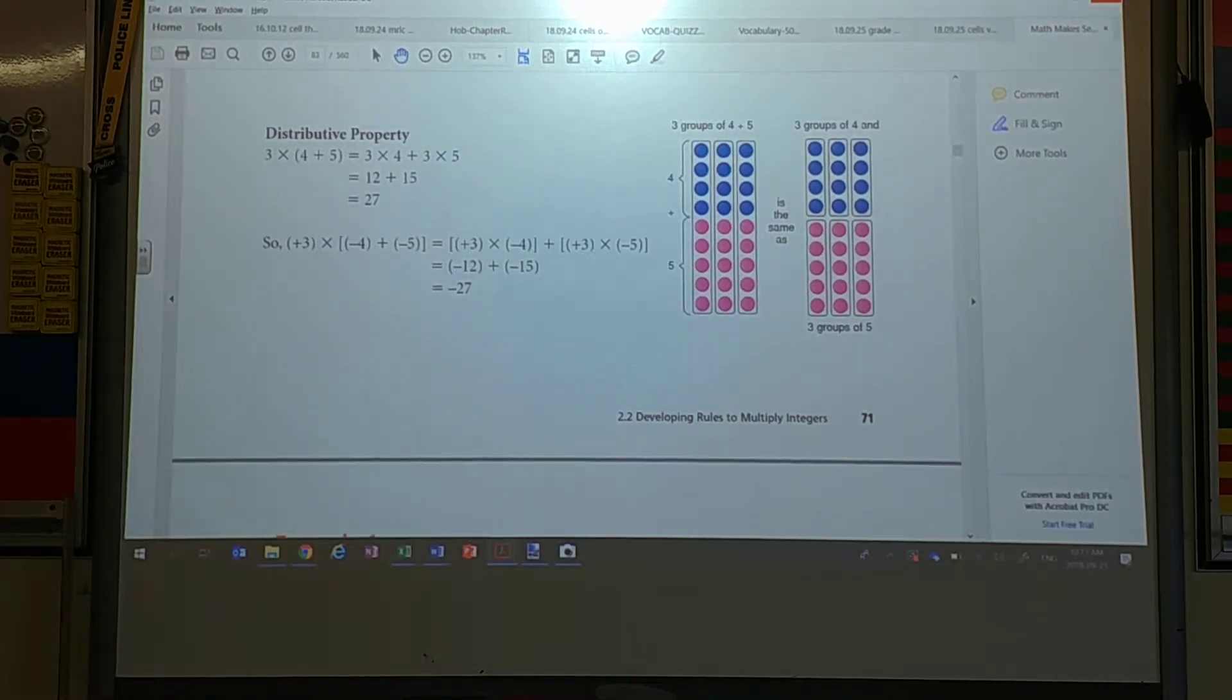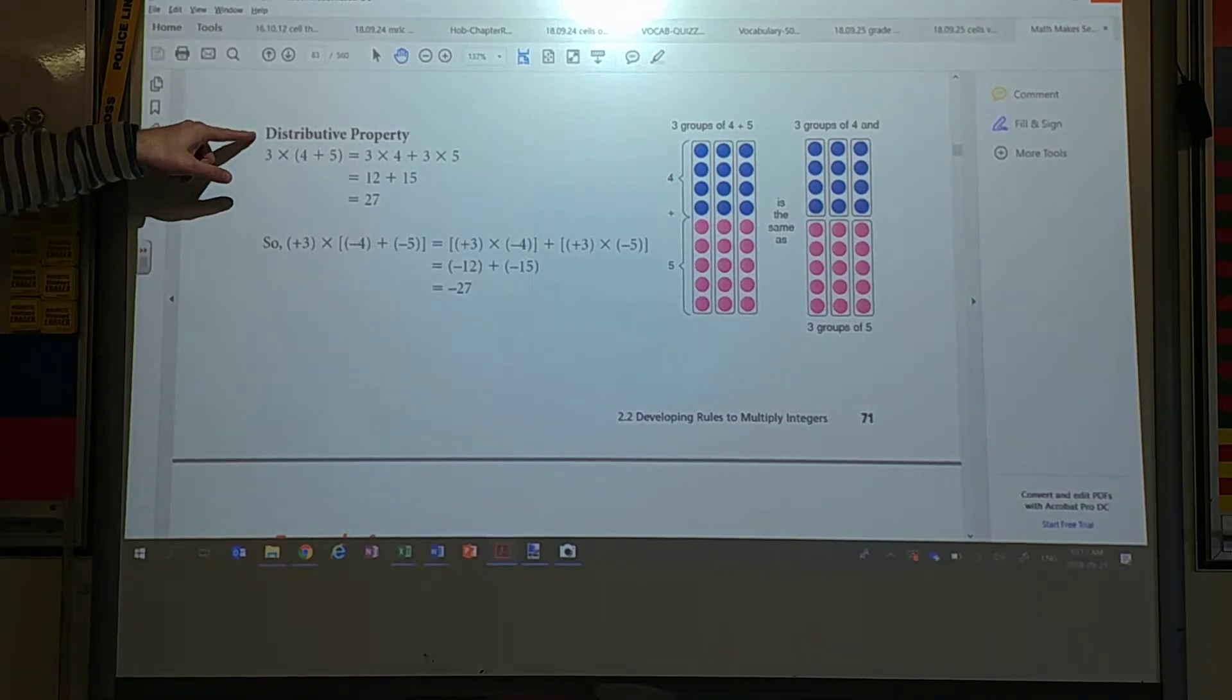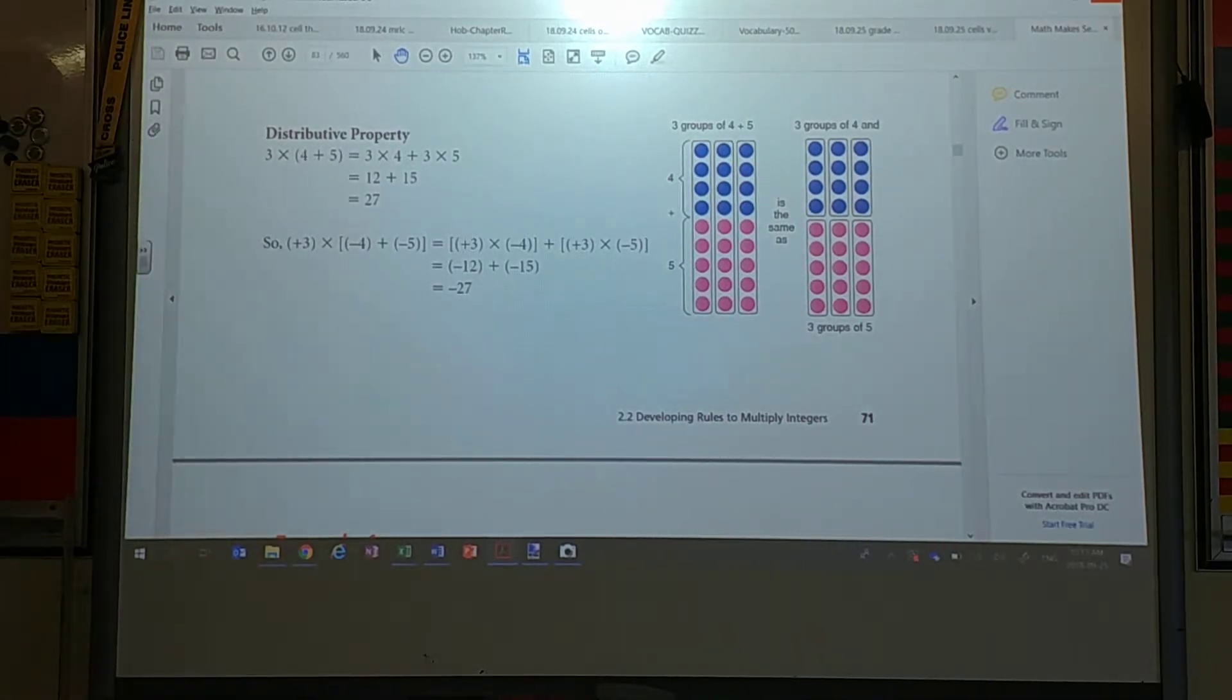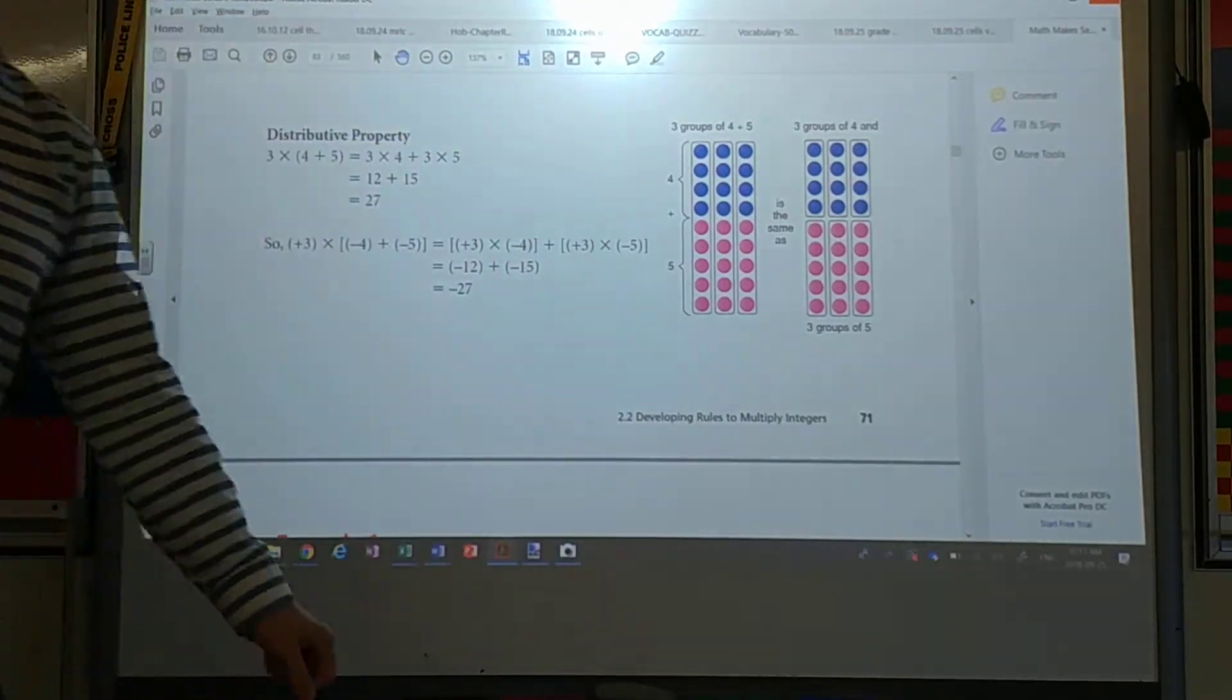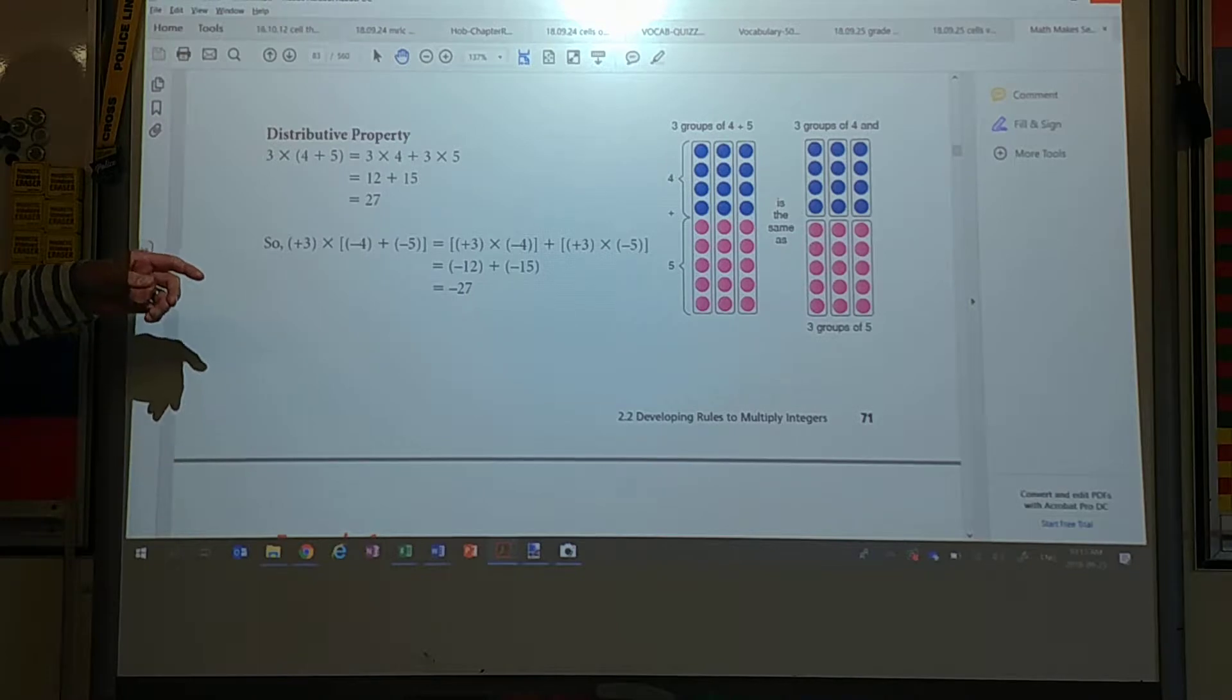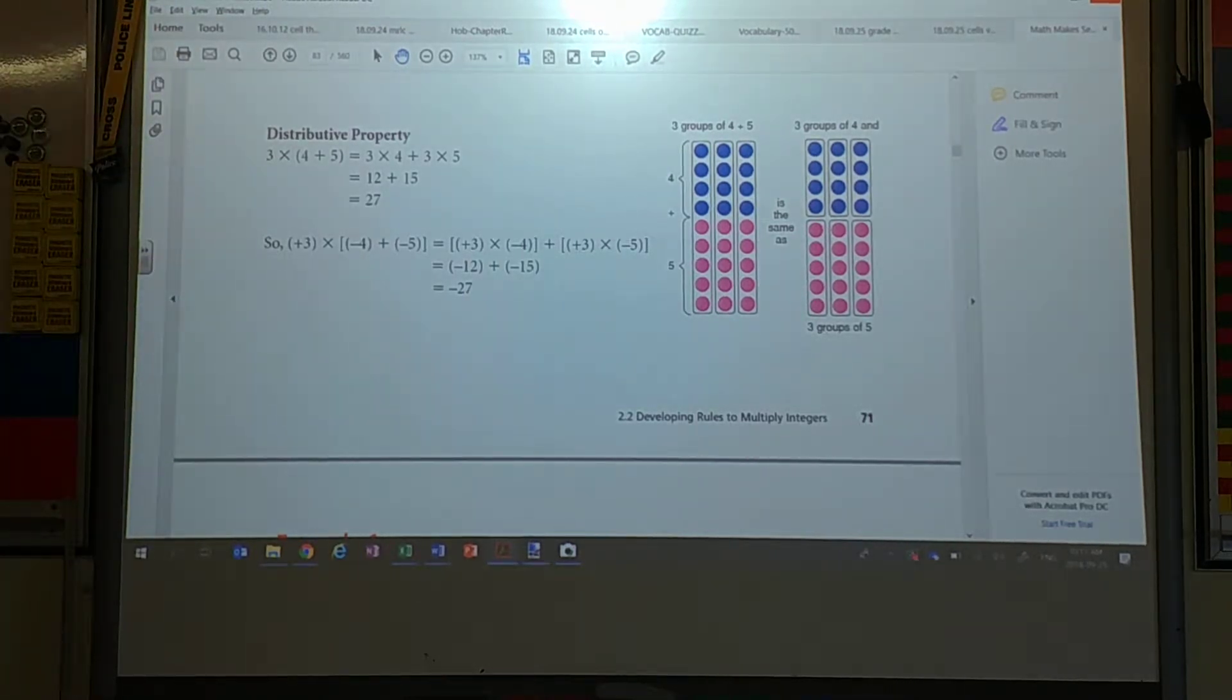Now there's something else called the distributive property. And this might be a little hard to see on your video. So if it's hard to see on your video, it's in your textbook on page 71. Or you can download the PDF right off of Edsby. So this is where you can just pause your video and download the PDF on your phone. You know, internet because you're at the farmhouse to say, yo, mom,